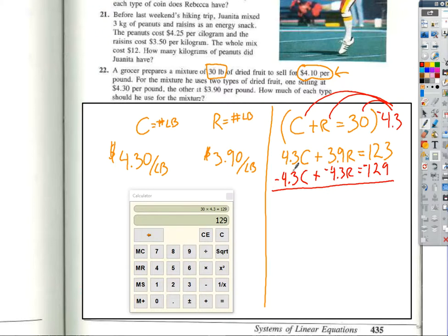So now, since we have opposites, we can go ahead and add the two expressions. 4.3C minus 4.3C, well that just cancels out. 3.9R minus 4.3R is going to be negative 0.4R. And that will be equal to, while I just do the subtraction, that one's not too bad, negative 6.